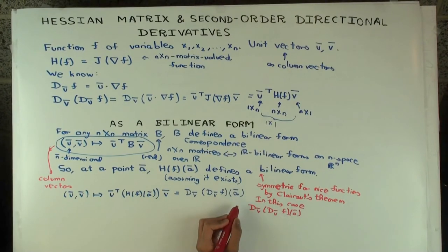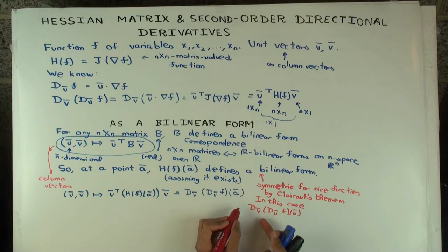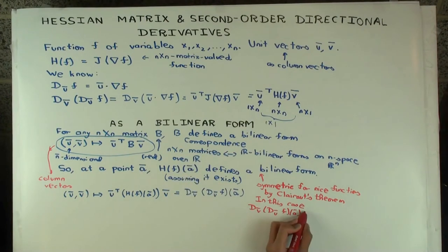So basically if you assume that the mixed partials and the pure partials are continuous, you can deduce from that that actually the sort of Clairaut's theorem generalizes to arbitrary directions, not just to the input directions.